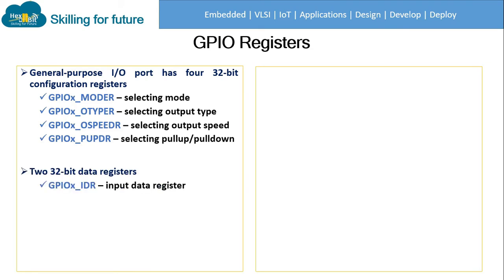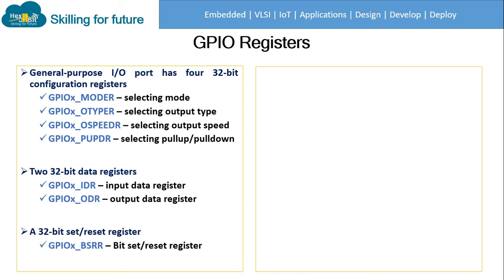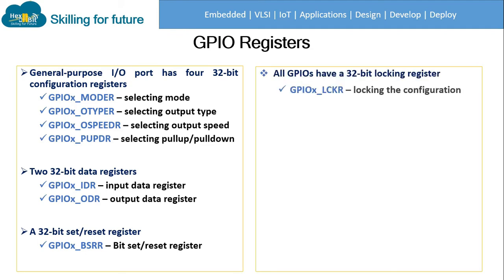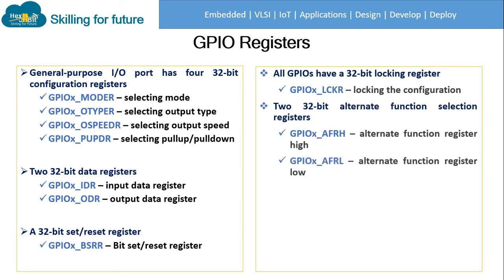The input data register holds the input data respective to the GPIO pin. Similarly, if we want to send output data to the pin, we can write to the output data register. Next is the 32-bit set or reset register, used to send high or low logic depending on the requirement. All GPIO have a 32-bit locking register, as seen in the locking/freezing feature, used to lock the configuration of GPIO.